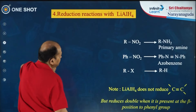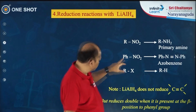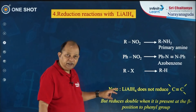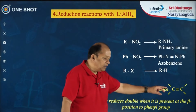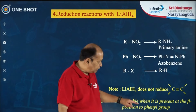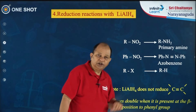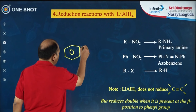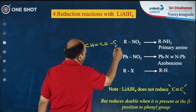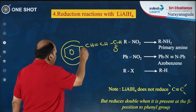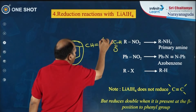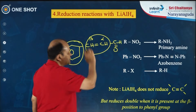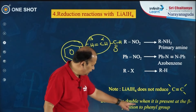Some more reactions with LiAlH4: nitroalkane converts to primary amine, nitrobenzene converts to azobenzene, and alkyl halide gives alkane. This is very important information — lithium aluminum hydride does not reduce the carbon–carbon double bond, but it does reduce the double bond when it is present in the beta position to the phenyl ring. In such cases, this double bond can also be reduced.